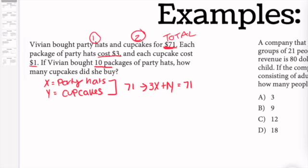So now we know if Vivian bought 10 packages of party hats, remember X is party hats, so she bought 10 packages. That means she already paid $30.